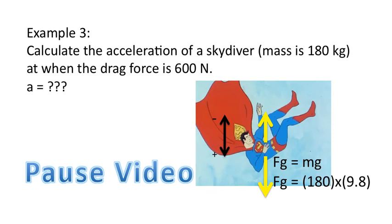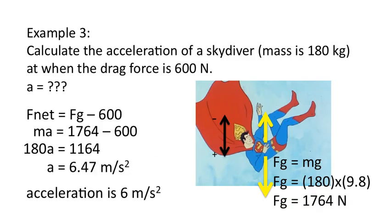All right. I hope you tried the question. Of course, when you've increased the mass, you've increased the weight. And there is the math. F net is Fg minus 600. Ma is equal to Fg minus 600. This time, notice, there's a larger net force. It's 1,164 newtons. And we get a larger acceleration of 6.47 meters per second squared. To 1 sig fig, that's only 6 meters per second squared. Why 1 sig fig? Because of the 600 here, which only has one significant digit.